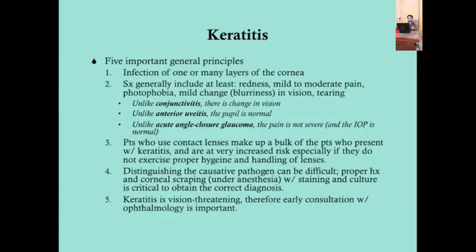Key differentials for red eye: conjunctivitis is the most common cause but does not cause change in vision or blurriness, whereas keratitis does. Anterior uveitis presents with a small pupil (miosis), while keratitis has a normal pupil. Acute angle closure glaucoma causes the worst pain the patient has ever had, elevated intraocular pressure, and a fixed mid-dilated pupil — with keratitis pain is mild, rated 3-5 out of 10, more like a foreign body sensation.